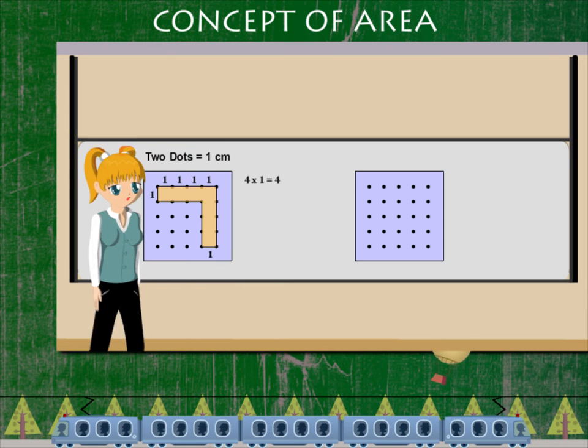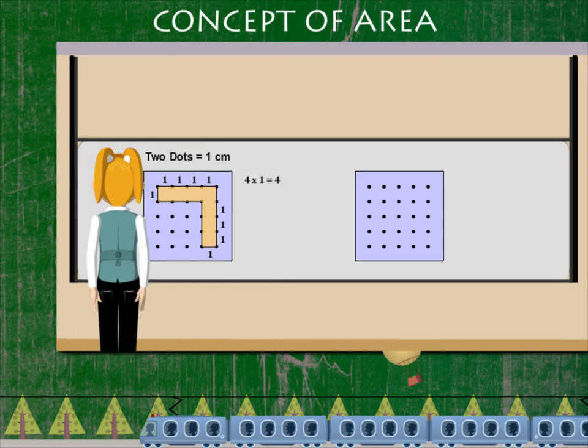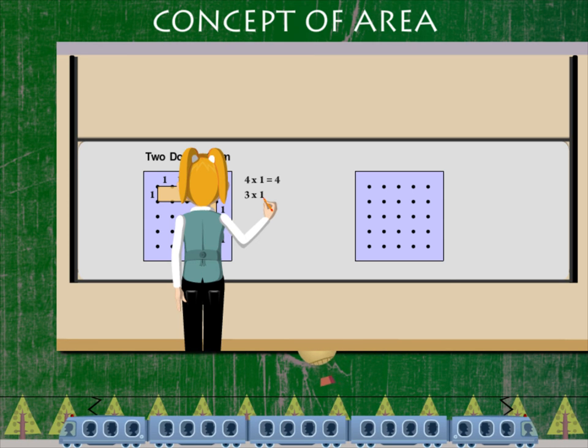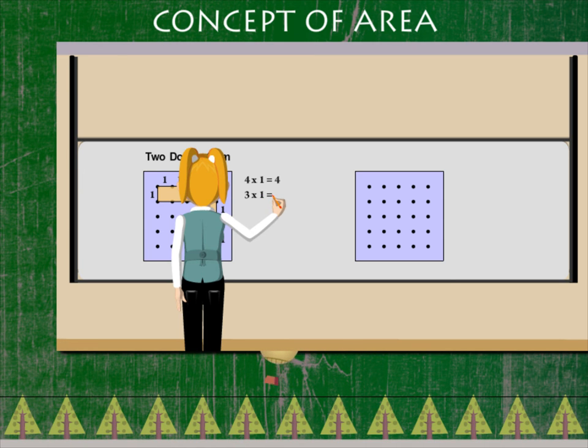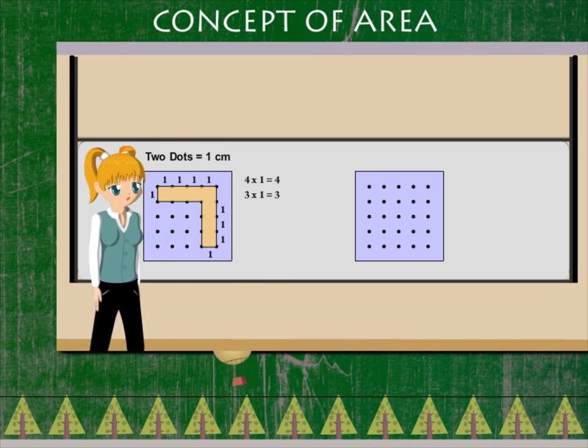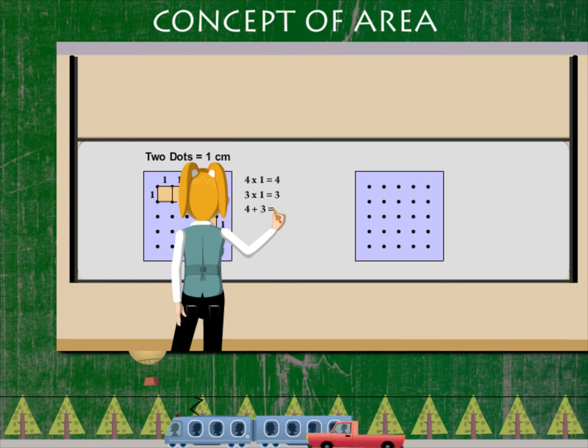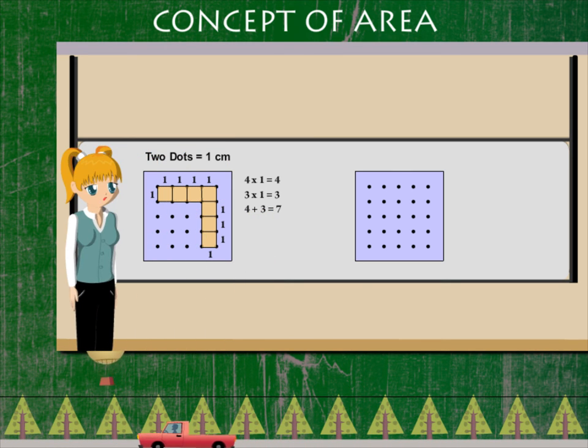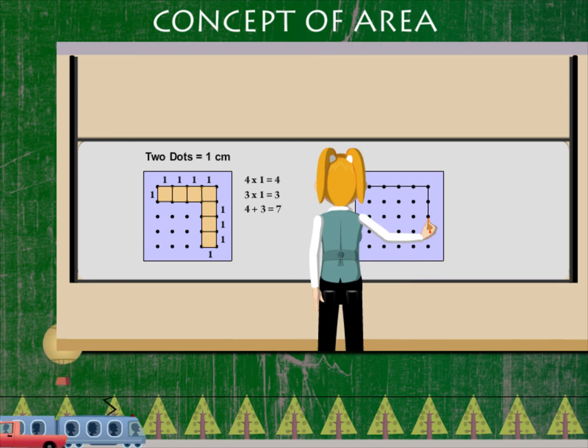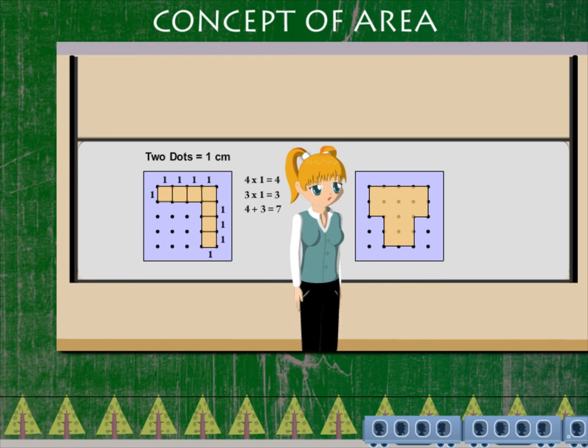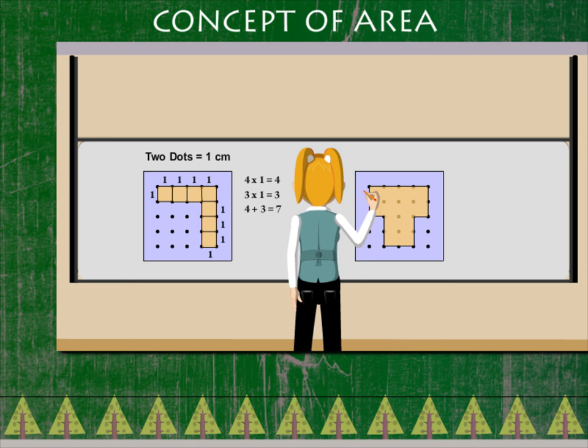gives four square centimeter. The lower area is three centimeter length and one centimeter width, which is three square centimeter. The total area is seven square centimeter. Nancy draws another figure on the next graphical board. The top part of